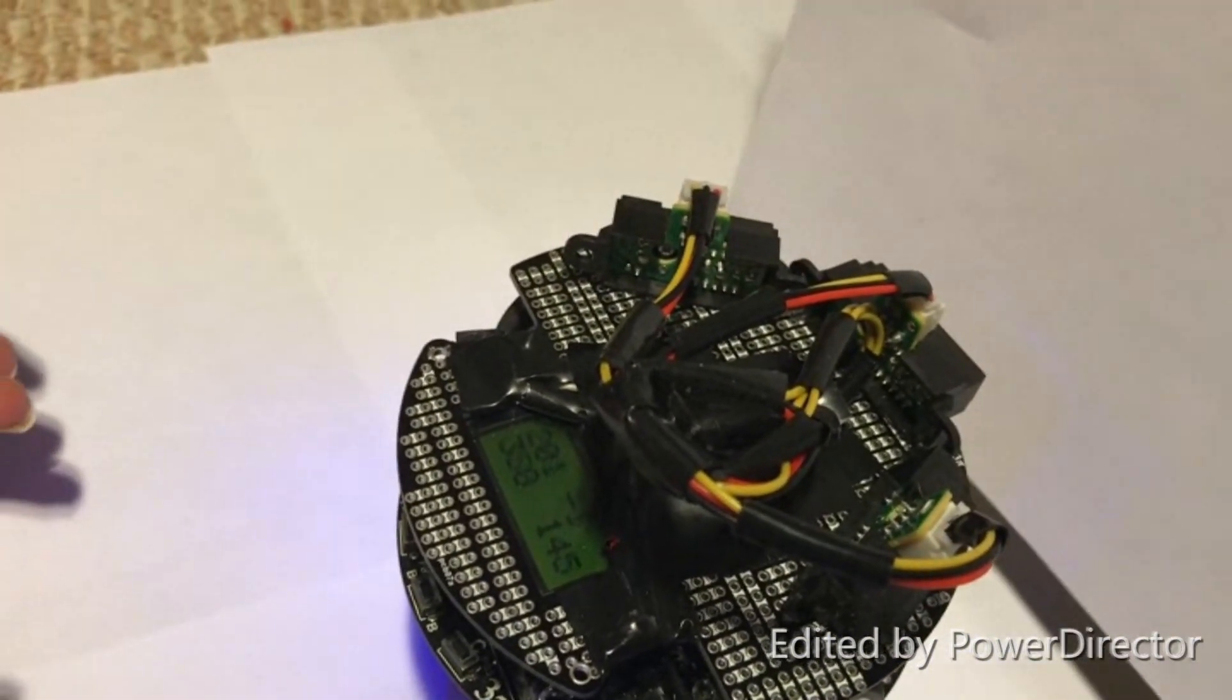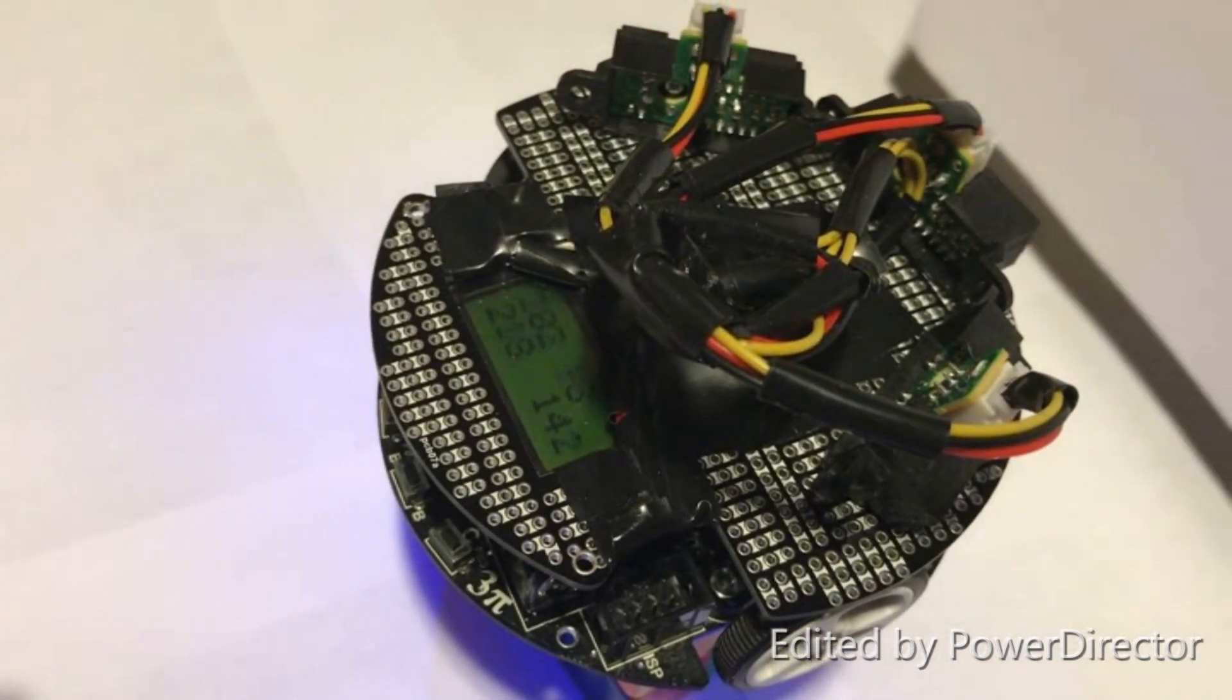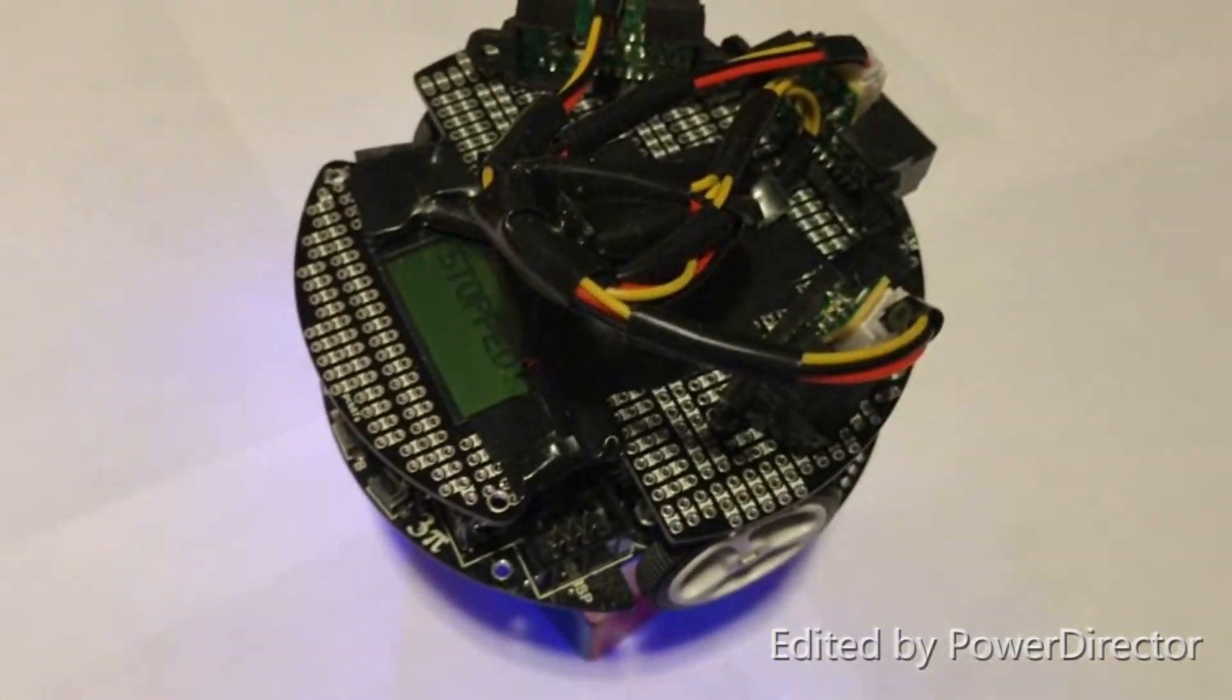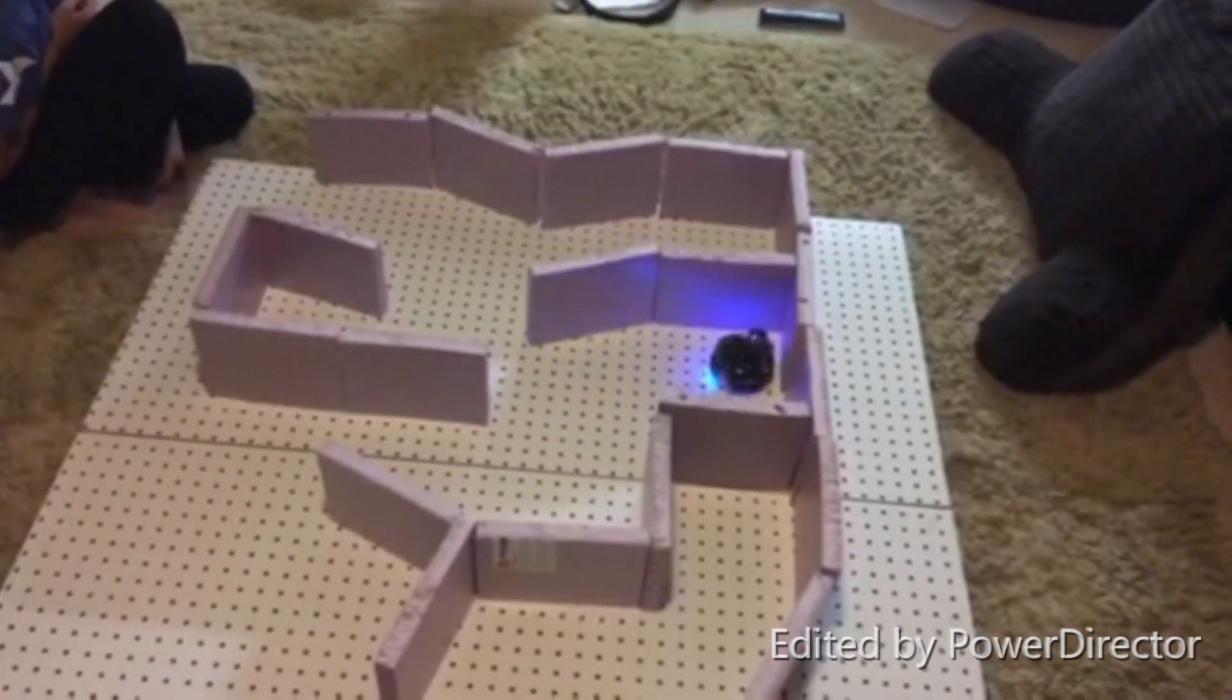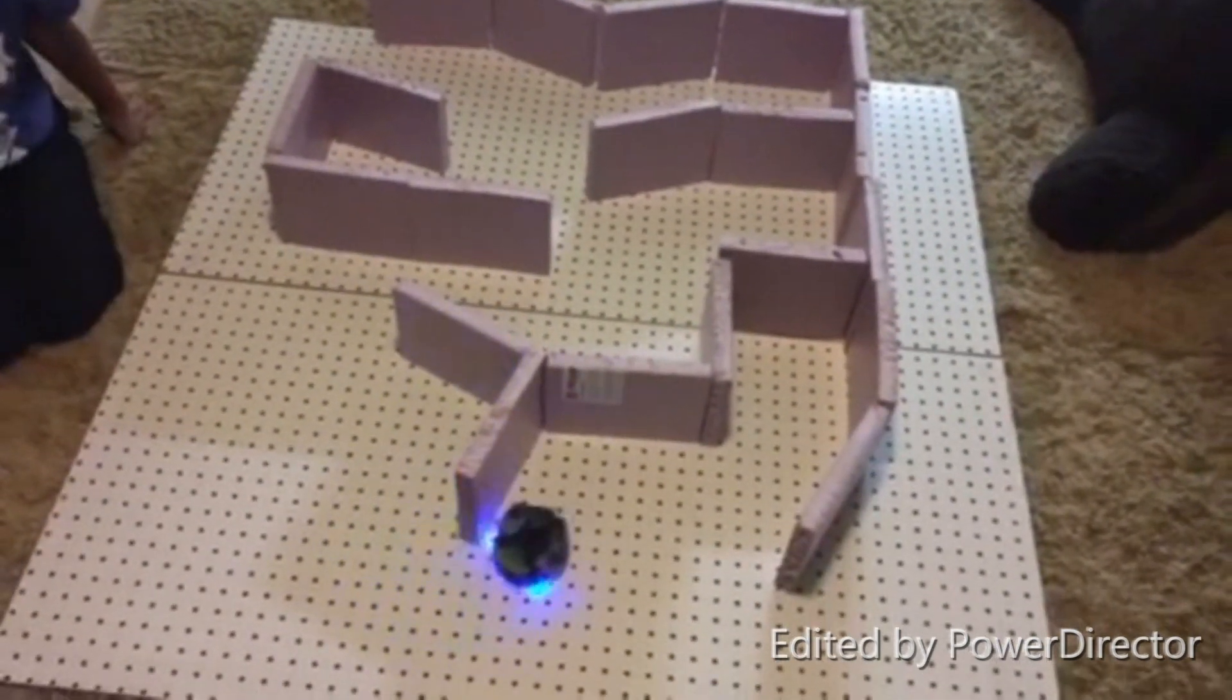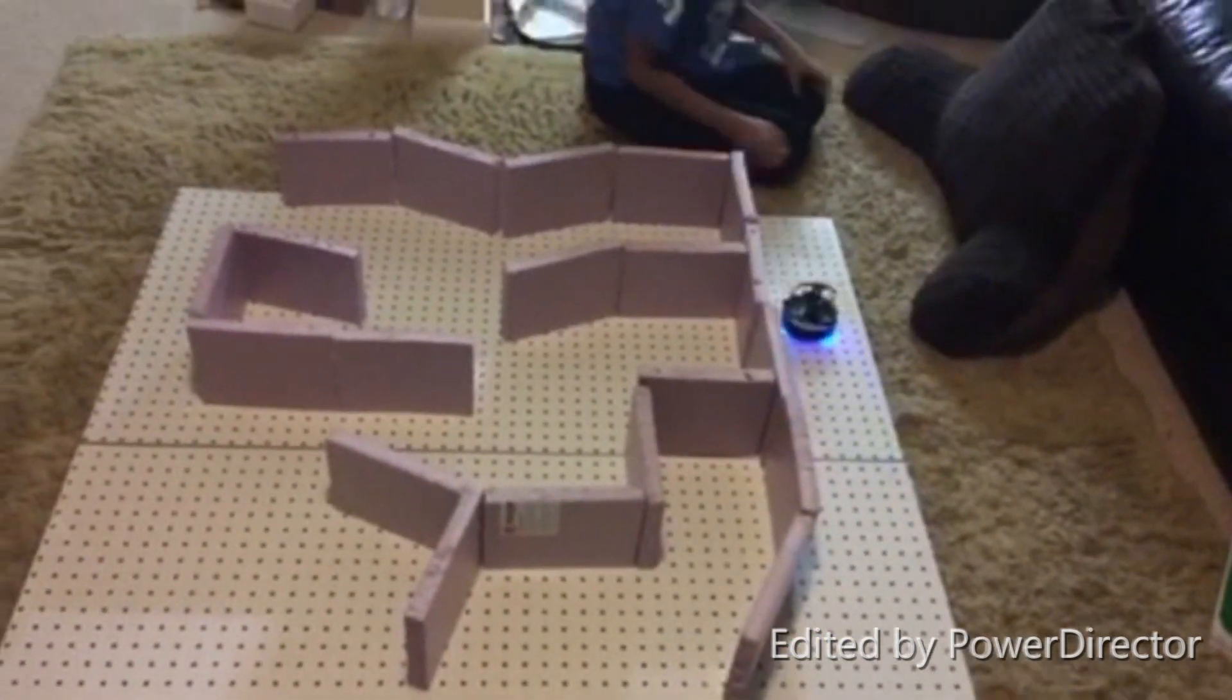Now if we put a paper in front, we can see that the front sensor is sensing something, and that the robot is turning away. Now let's see the robot in action. Starting the robot now, it's using the proportional derivative algorithm that I wrote using C programming, and it's following the left wall. It tries to turn towards the wall, and if it gets too close, it turns away. Now you can see it turning on a dime, and it does that whenever it reaches a dead end.